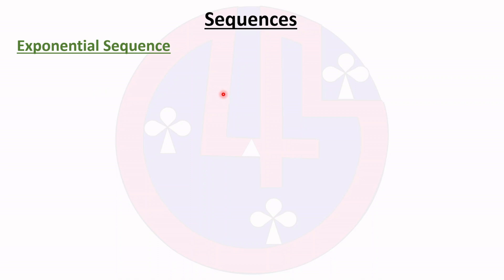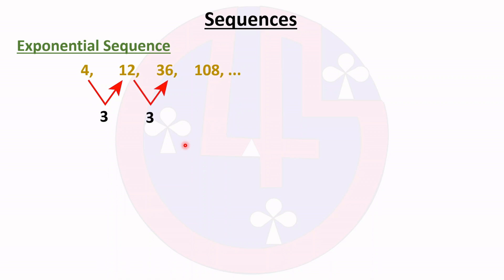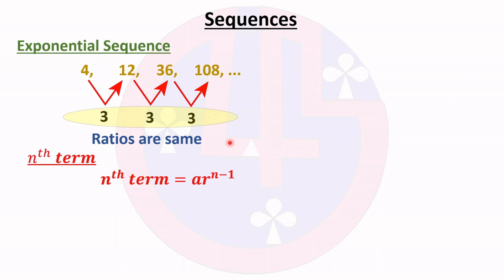Here we are discussing exponential sequences, also called geometric sequences. For the example 4, 12, 36, 108: we find the ratio — 12 divided by 4 is 3, 36 divided by 12 is 3, and 108 divided by 36 is 3. Since all ratios are the same, this sequence is an exponential sequence.